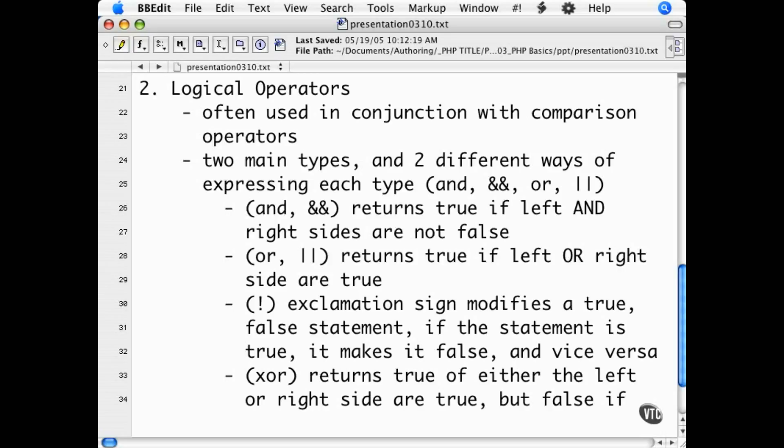The and operator is represented by the word and, or two ampersands together. This logical operator will return true if the left and right sides are not false.